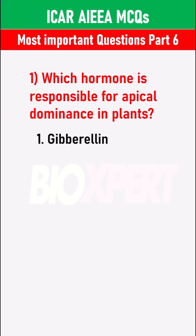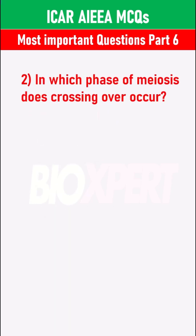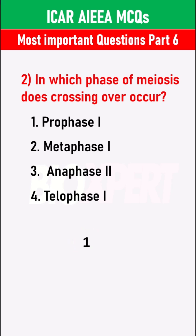Which hormone is responsible for apical dominance in plants? Auxin. In which phase of meiosis does crossing over occur? Prophase 1.